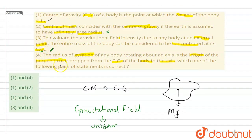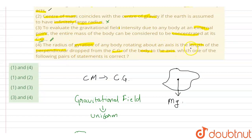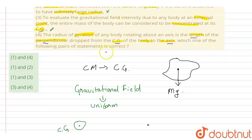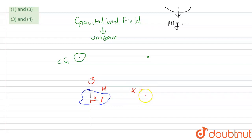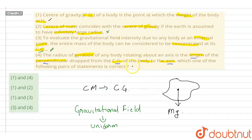The fourth statement says radius of gyration of a body about an axis is the length of the perpendicular dropped from the center of gravity to the axis. However, this is not the complete definition. Radius of gyration is defined as the radial distance from the axis of rotation at which, if the whole mass of the body is concentrated, the moment of inertia remains the same. Its equation is k = √(I/m), where I is the moment of inertia and m is the mass. Statement four makes no mention of moment of inertia being preserved, so it is not true.